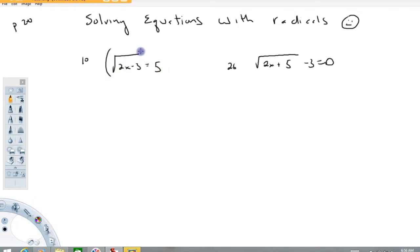So I'm going to go ahead and write this out and when we square the square root of 2x minus 3 what we get is 2x minus 3 equals, and on the right hand side when we square 5 we get 25. So the idea of squaring both sides is how we make radicals go away.